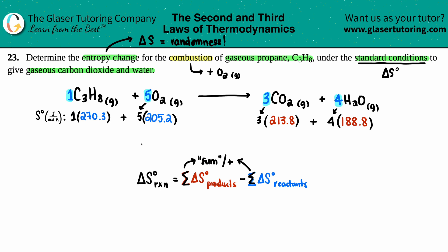And I get 1296.3 on my total on my left side. And then let's do the right side: three times 213.8 plus four times 188.8, and I get a total of 1396.6.